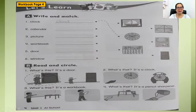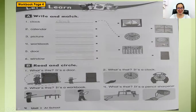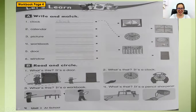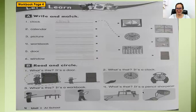On activity B, you are going to read and circle. Circle and write: 'It's a door.' What's this? 'It's a workbook.' Circle the object that is mentioned in the question. Do the same for numbers two, three, and four. That's all for today. If you have any questions, you can ask me. Goodbye, thank you.